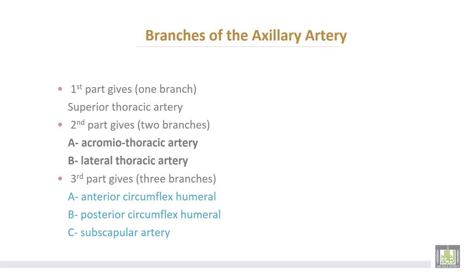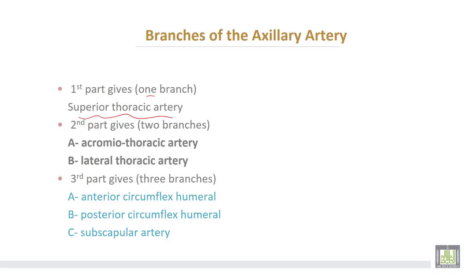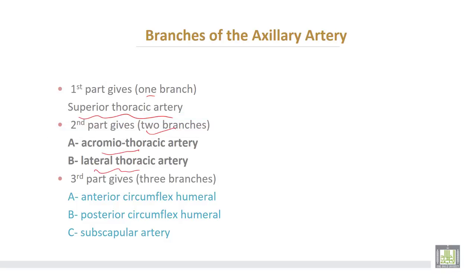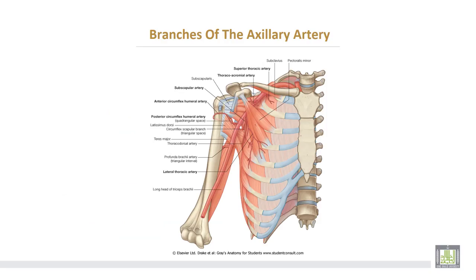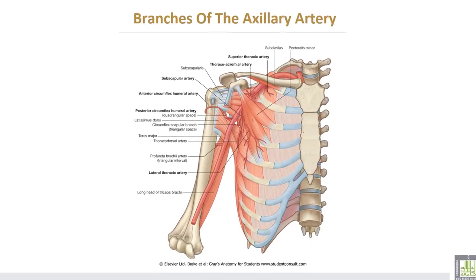Branches of the axillary artery: the first part gives one branch only — the superior thoracic artery. The second part gives two branches: the acromiothoracic artery and the lateral thoracic artery. The third part gives three branches: the anterior circumflex humeral artery, the posterior circumflex humeral artery, and the subscapular artery.